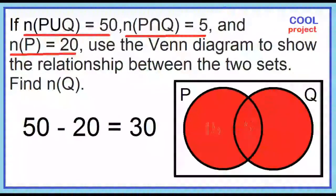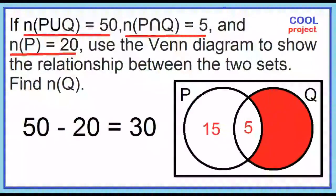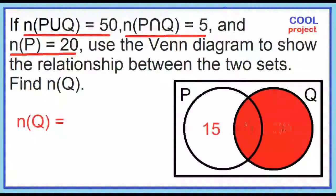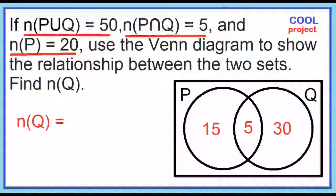So 50 minus 20 is 30. What's the cardinality of set Q? The cardinality of set Q is 35.